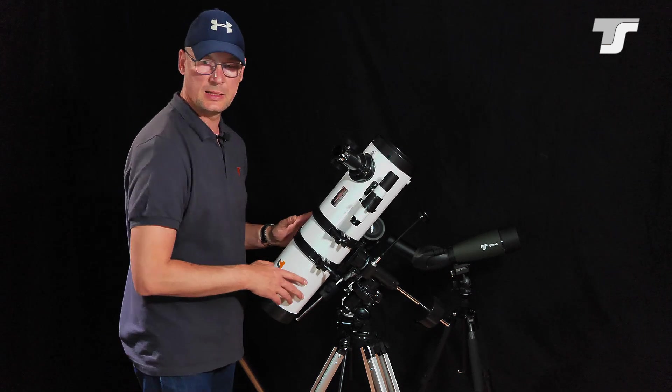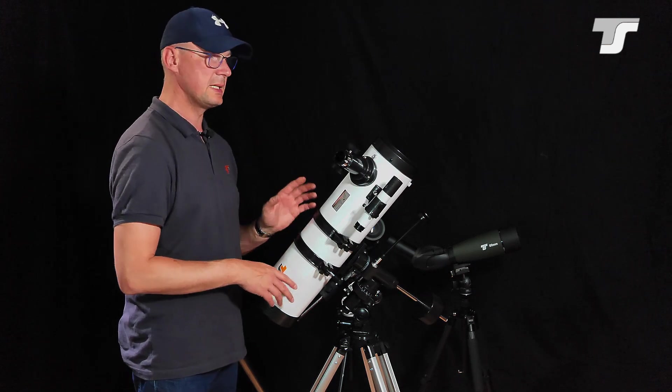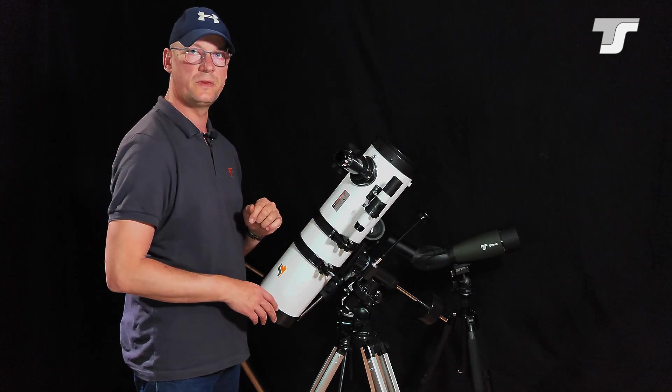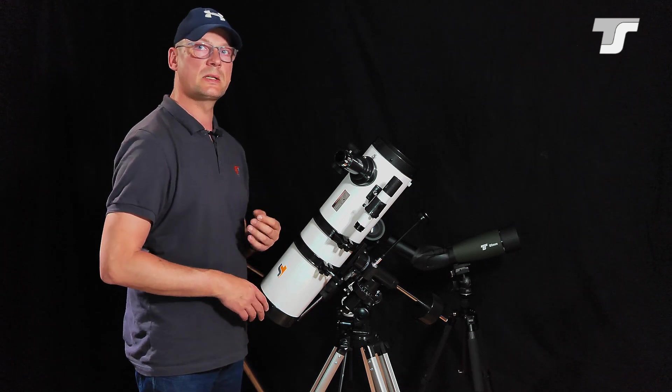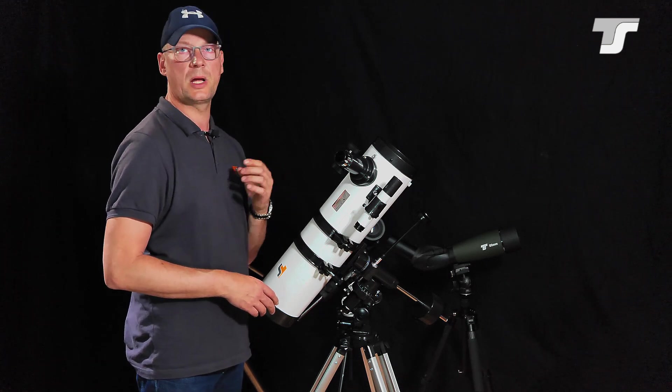There's one accessory left. This is a moon filter, so-called moon filter. It is a green filter which increases the contrast and also dims the brightness.